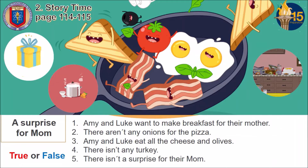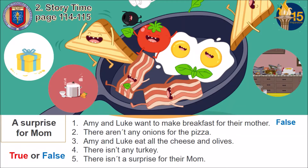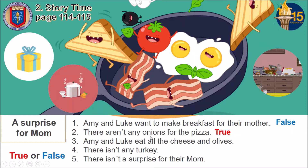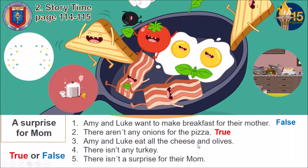Number one: Amy and Luke want to make breakfast for their mother — that is false, because they want to prepare dinner, not breakfast. Number two: there aren't any onions for the pizza — that is true, they don't have any onions and they need them. Number three: Amy and Luke eat all the cheese and olives — they had some, but they ate it all, so that is true.